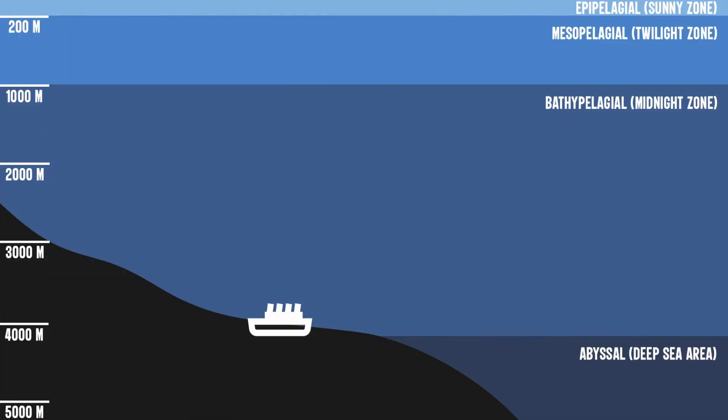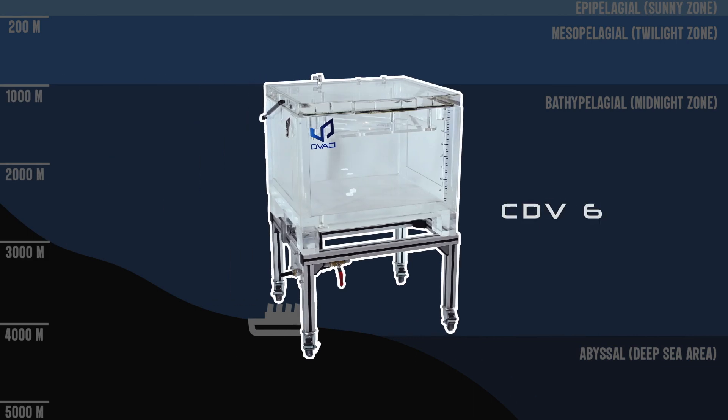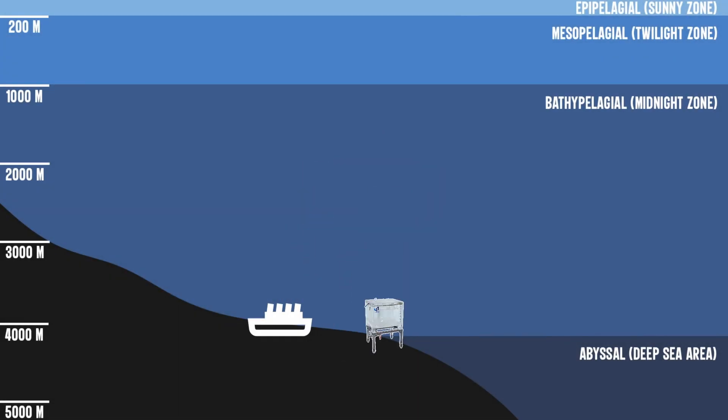Imagine! If our vacuum chamber, CDV-6, were next to the Titanic, the weight on the lid would be 380 bars. These, multiplied by the area of the lid, would be equivalent to 1,824 tons on the chamber. Impressive, right?